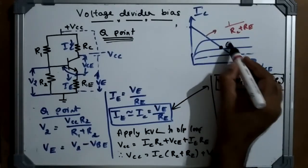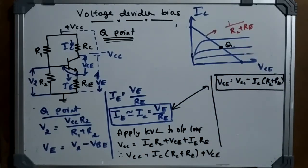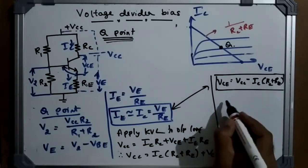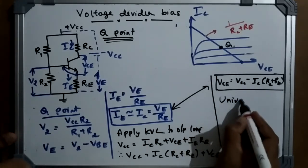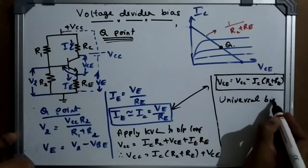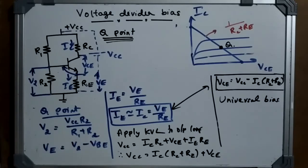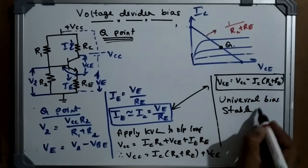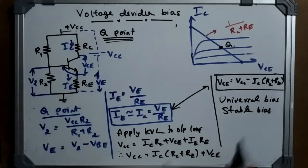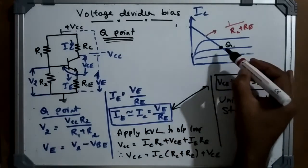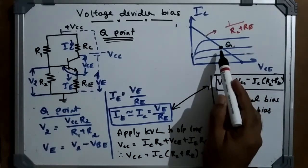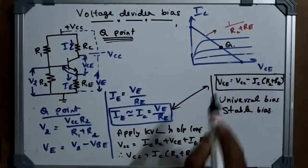Voltage divider bias is widely used in amplifier circuits, which is why it is also called universal bias. It is used because it provides a stable biasing arrangement — meaning the Q point remains stable, with no variation in IC and VCE, regardless of the reason.